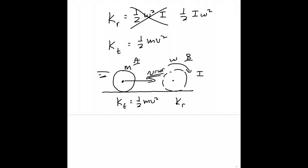The rotational kinetic energy is one-half I omega squared, so we can say the total kinetic energy of a rolling object is the sum of its translational plus rotational kinetic energies, which is one-half m v squared plus one-half I omega squared.